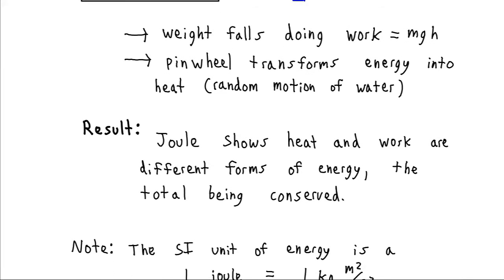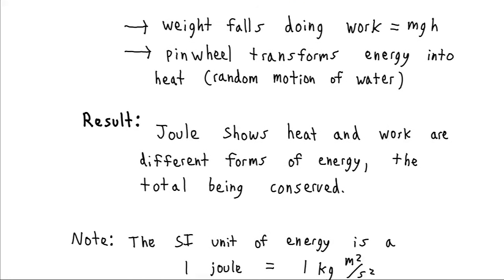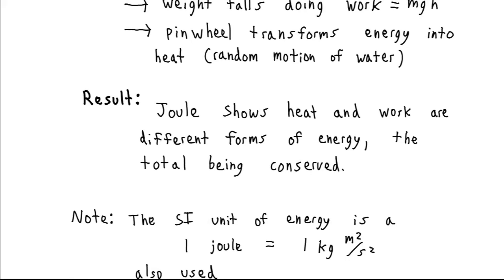Joule has established this very important result, but it's actually very controversial. No one believes him at the time, partly because his experiments are so precise — they don't realize what delicate apparatus he has as a brewer — and because everyone thinks that heat is a fluid which transfers and is always conserved. Joule upsets the status quo but is very persistent and eventually convinces people. Because this is such a monumental result, the SI unit of energy is named the Joule in his honor.